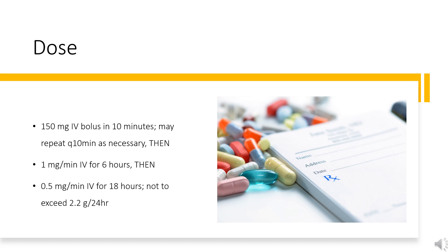ACLS — Pulseless ventricular fibrillation/ventricular tachycardia (off-label): 300 mg IV or intraosseous push after dose of epinephrine if no initial response to defibrillation. May follow initial dose with 150 mg IV every 3–5 minutes for ventricular arrhythmias.